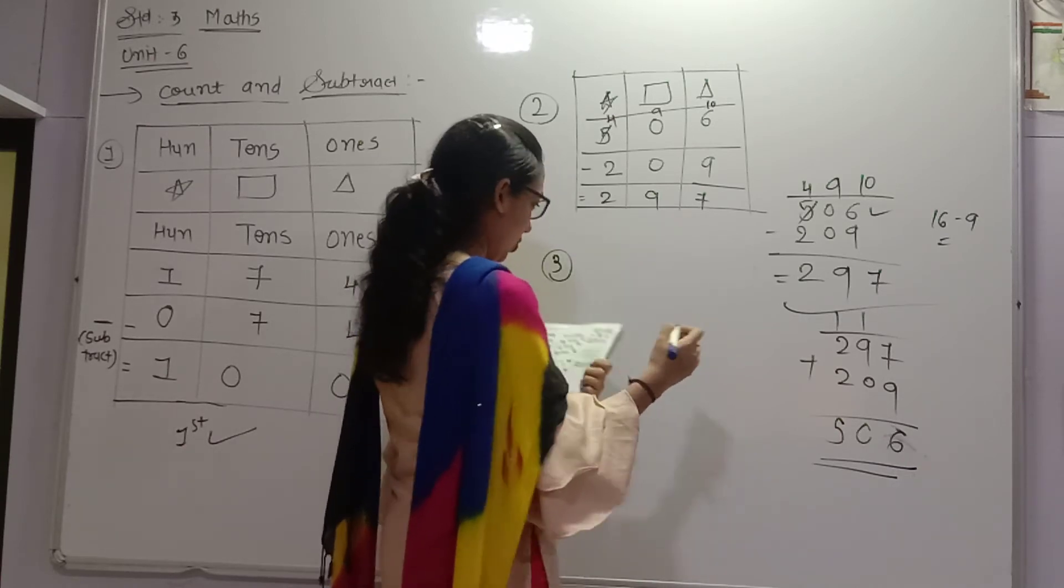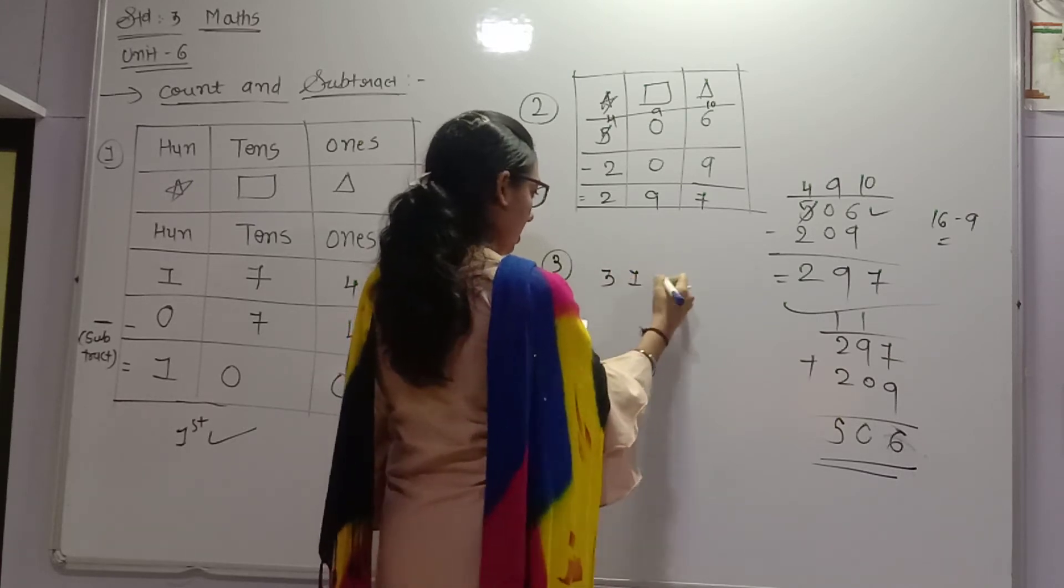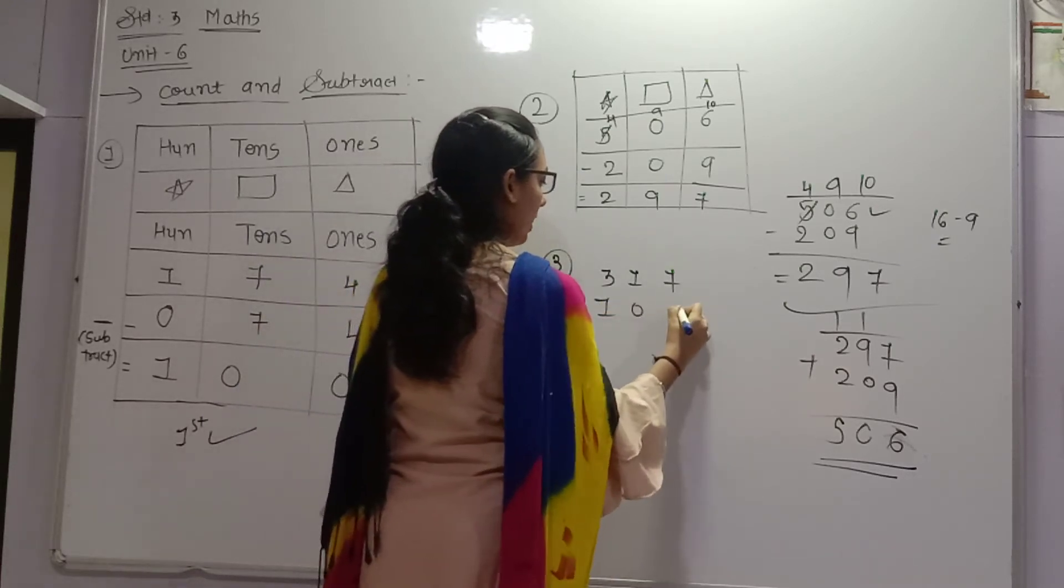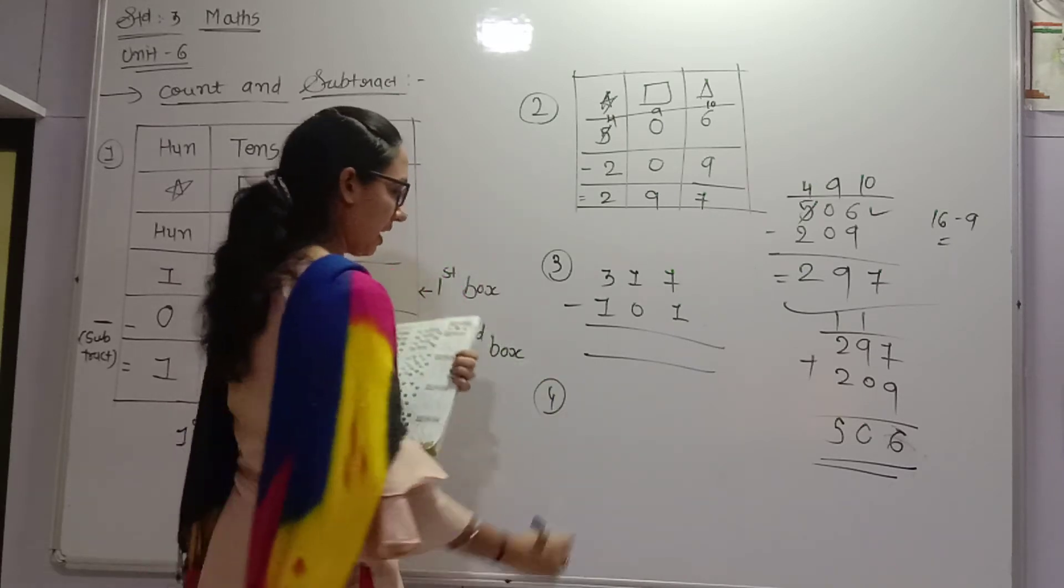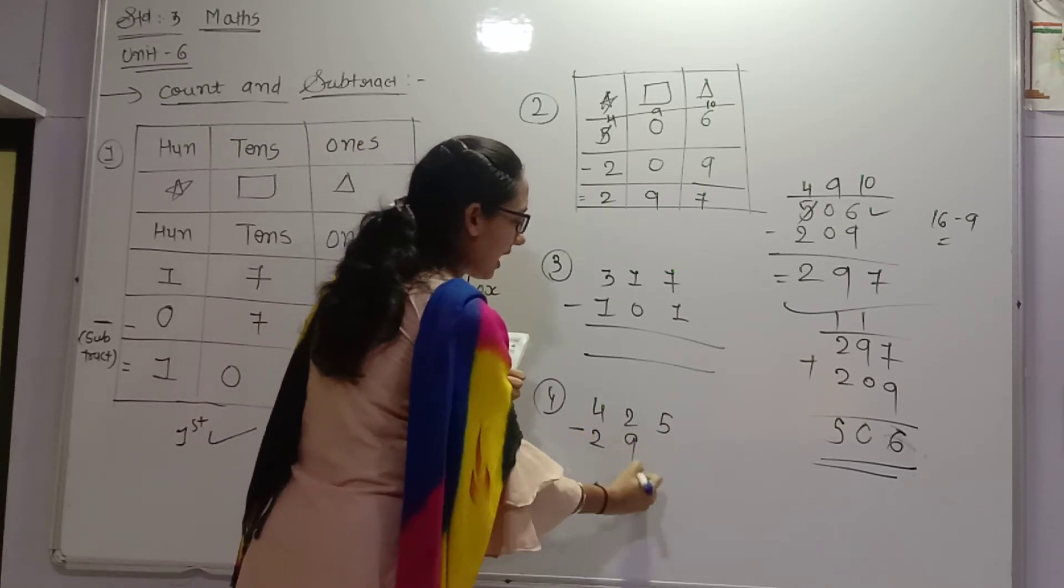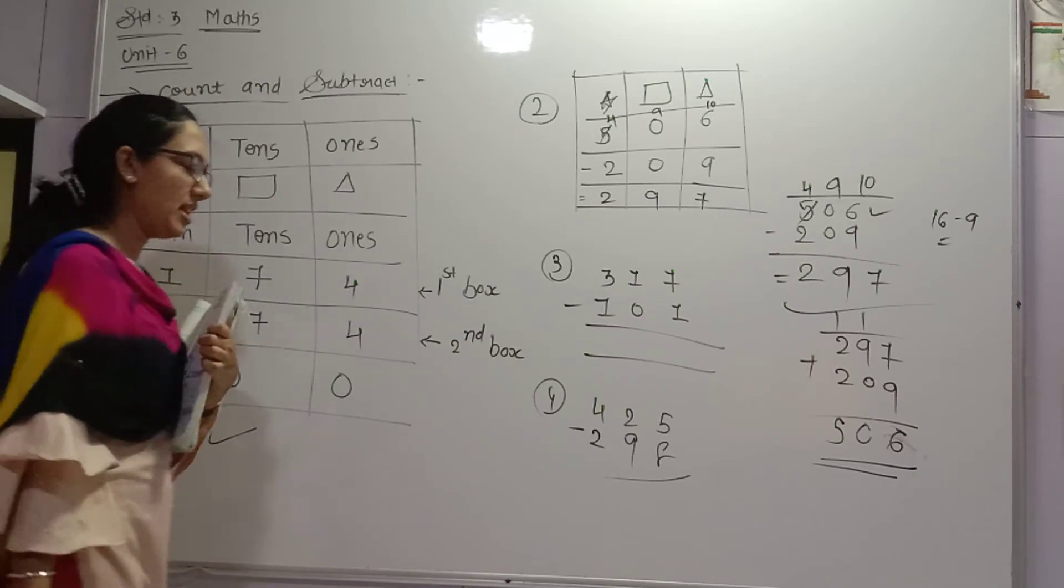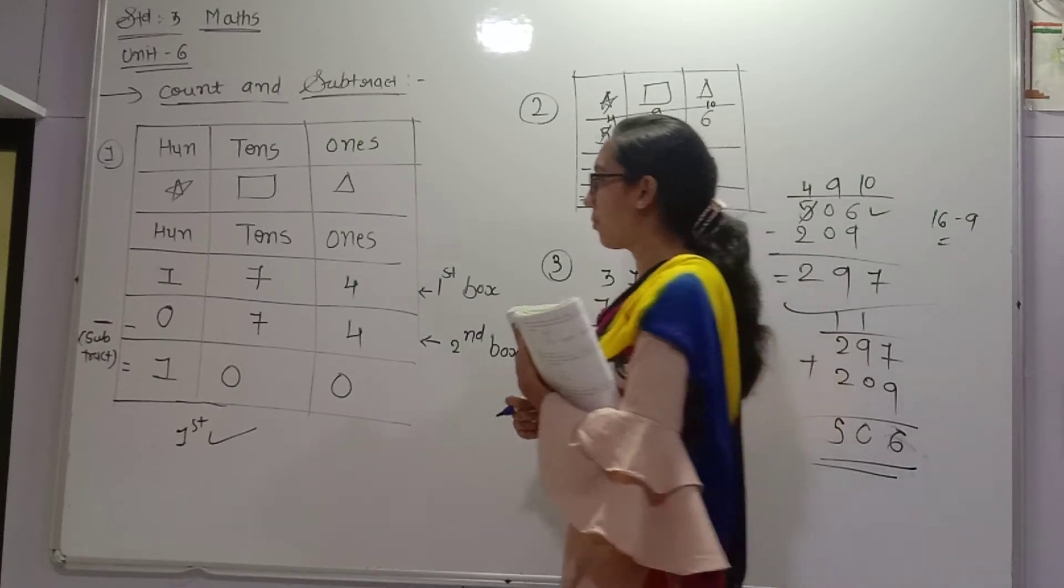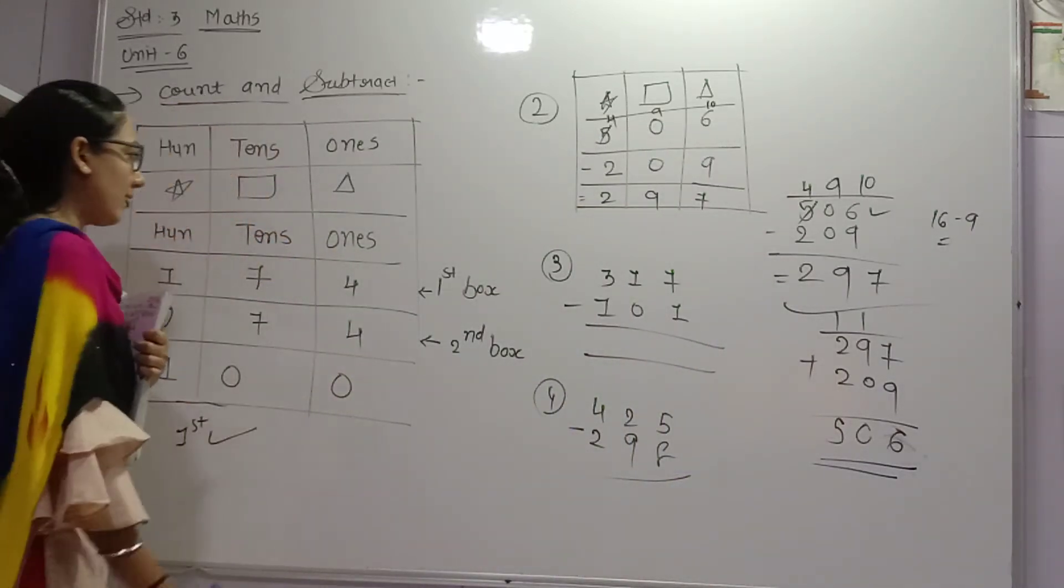The last one is 425 minus 290, 280. If we check, we have to do this. So count and subtract we have to do this first, then after first line, second line, second box, mark and subtract.